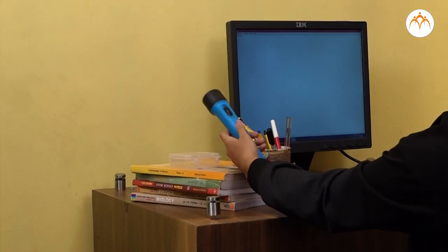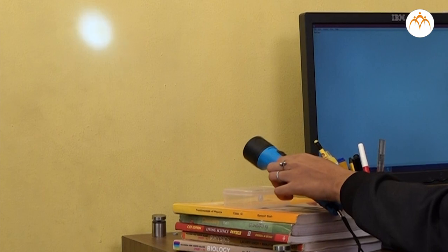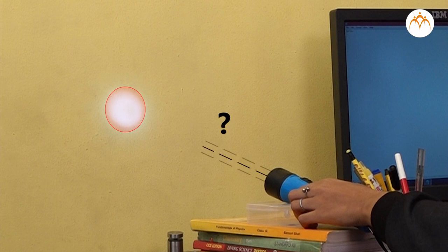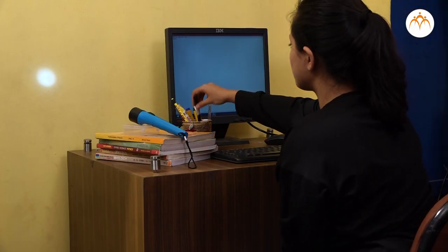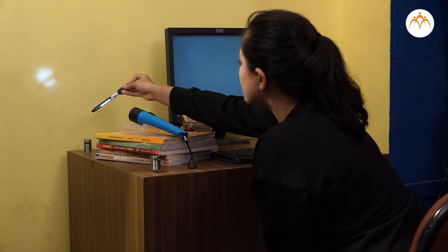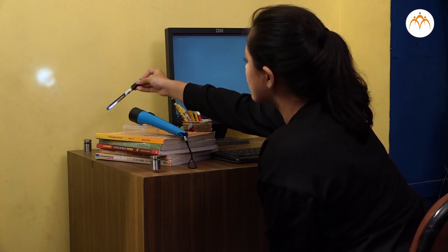Let me take this torch and flash it on the wall. You can see the flashlight on the wall, but how about the path from battery to the wall? I don't see any light in the path. Let me hold this pen at some places in the path and check if light is really present there as well.